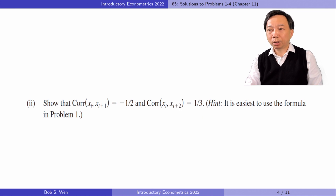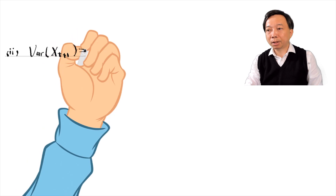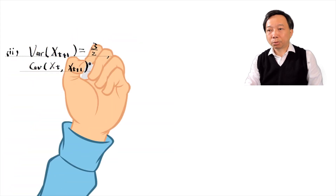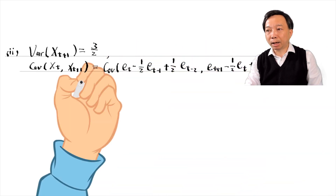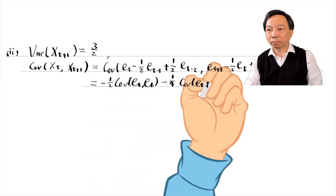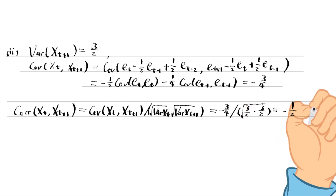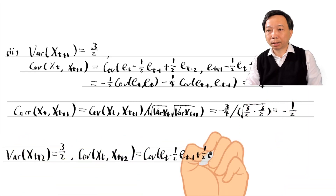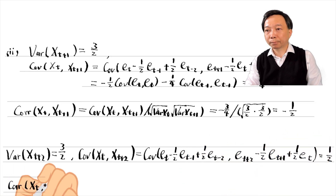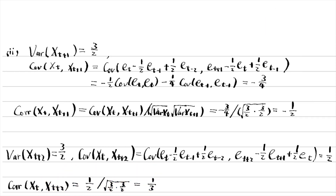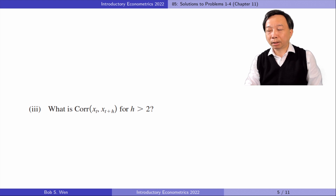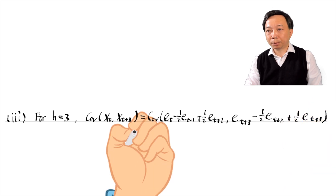In part two, we will show the correlation between Xt and Xt plus 1 and the correlation between Xt and Xt plus 2. We know that the variance of X in time t, time t plus 1, and time t plus 2 are all 3 over 2. The covariance between Xt and Xt plus 1 is minus 3 over 4, so the correlation between them is minus 1 over 2. We can also obtain the covariance between Xt and Xt plus 2 and their correlation. In part three, we can show that when H is greater than 2, the covariance between Xt and Xt plus H is zero, so the correlation between them is also zero.